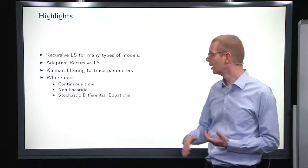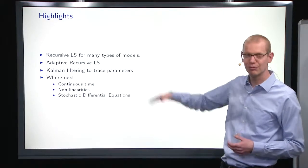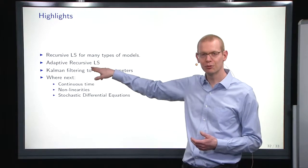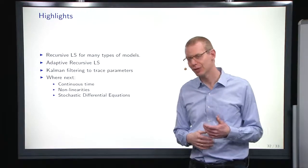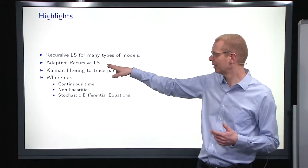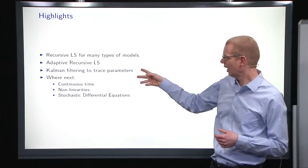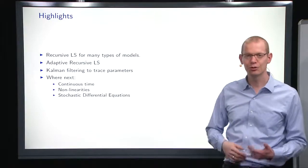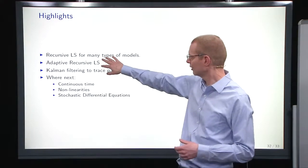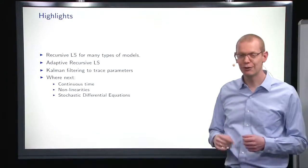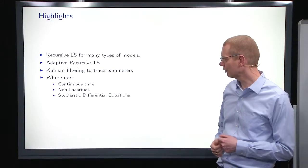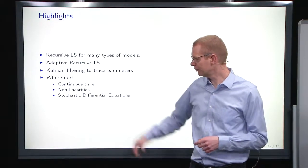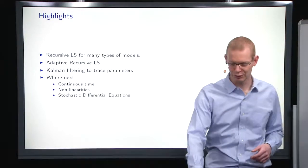So, highlights for today: recursive least squares, you can wrap many different models into that. In practice, you will often want to do it adaptively, in particular if you have something where things are indeed changing over time. And you can use the Kalman filter to trace parameters. And you can do a pseudo-adaptive recursive least squares if you have an ARMA model structure as well. And then a little bit about what to do in continuous time, non-linearities, and stochastic differential equations.